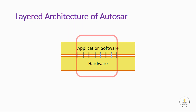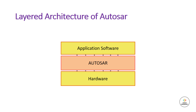Hence, for any small change in the hardware like the processor, the entire software had to be altered in order to make the module functional. This could be time-consuming and the effort of development was also on the higher side. So AutoSAR came into the picture to resolve this issue.